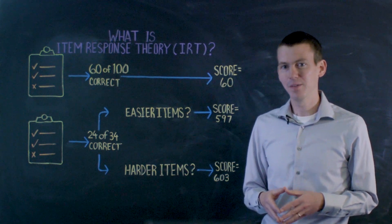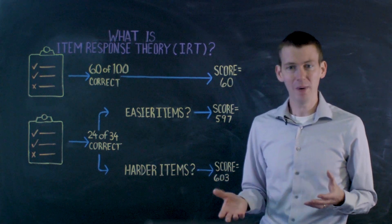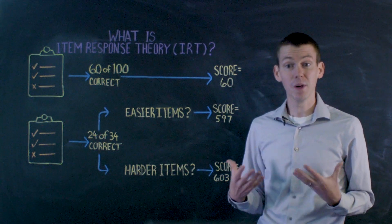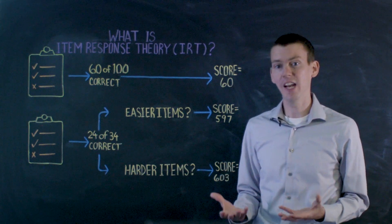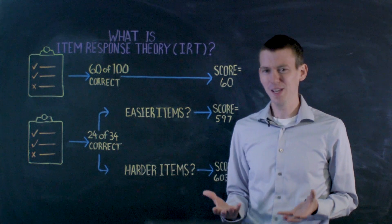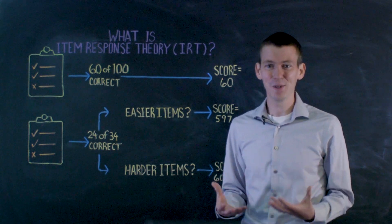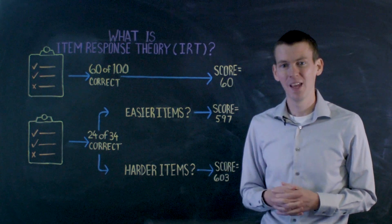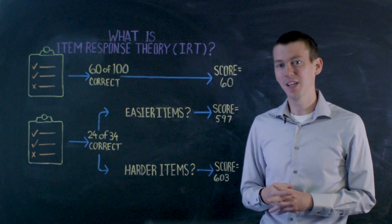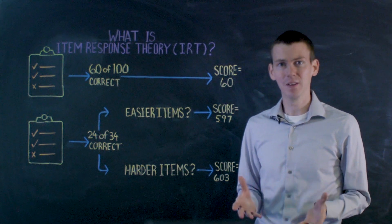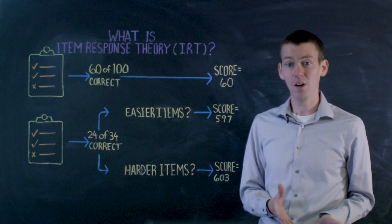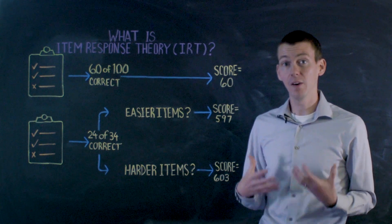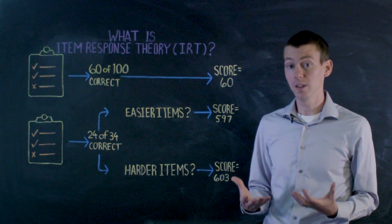At Renaissance, we've experimented with a lot of different models. And we've decided to use the unidimensional dichotomous one-parameter model because we found that works best. Now what does that mean? Well, in our model, math items only measure math ability. They only measure one single thing. And they're dichotomously scored. That means a student either gets it right or they get it wrong. And we're only looking at student ability and item difficulty when we're scoring the test.